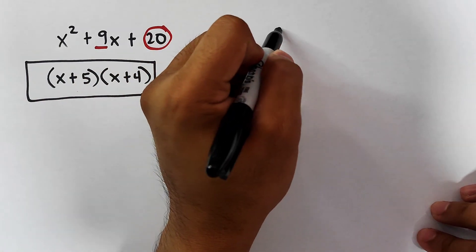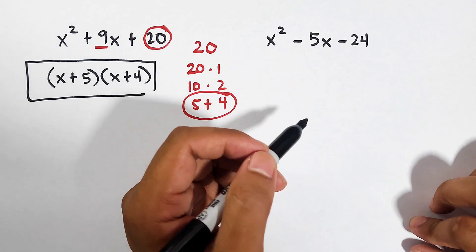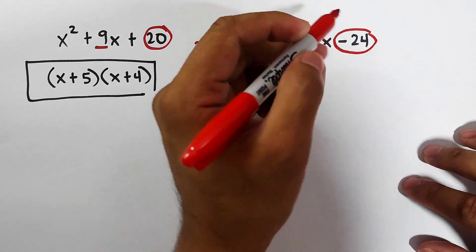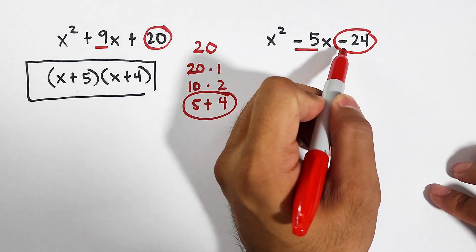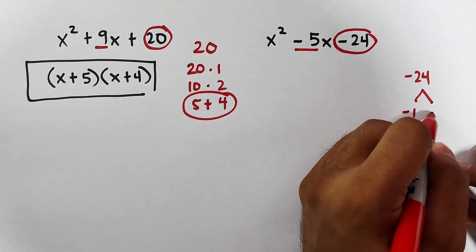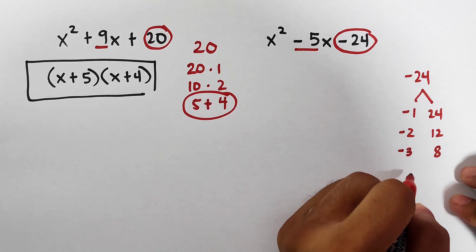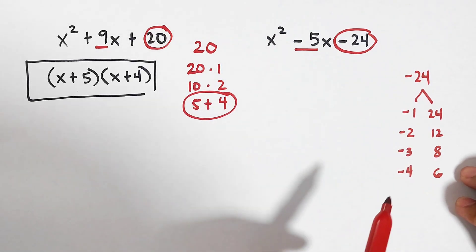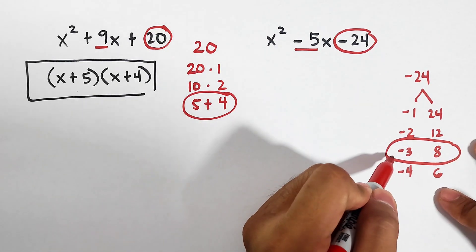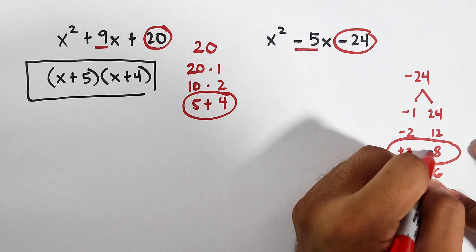Let's go with the third example. We have x squared minus 5x minus 24. As you can see, both signs are negative. We need to think of factors of negative 24 that will add up to negative 5. Since the product is negative, we're expecting the factors to have different signs. The factors are negative 1 times 24, negative 2 times 12, negative 3 times 8, and negative 4 times 6. Only 3 and 8 give us a sum of 5, but we need negative 5. When we add negative 3 and 8, it gives positive 5, so we reverse: 3 becomes positive and 8 becomes negative.